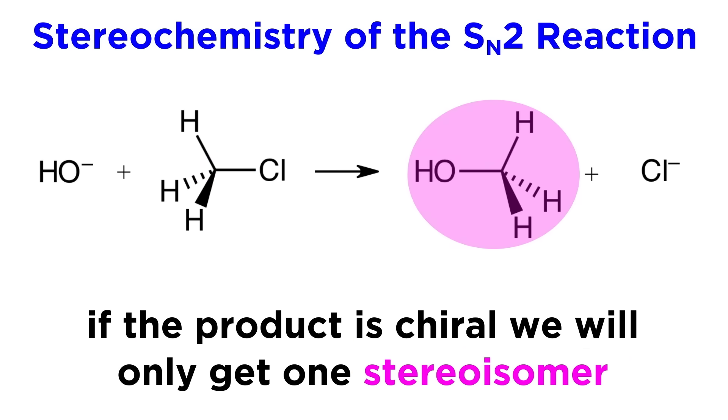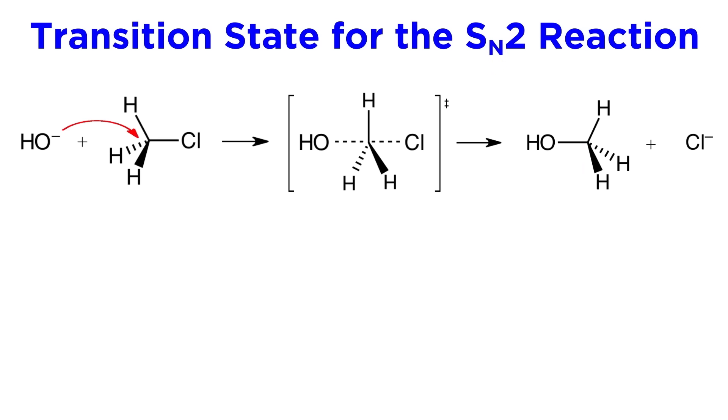This means that if the product is chiral, we will only get one of the possible stereoisomers. To understand why this is the case, let's look at the transition state for this reaction.